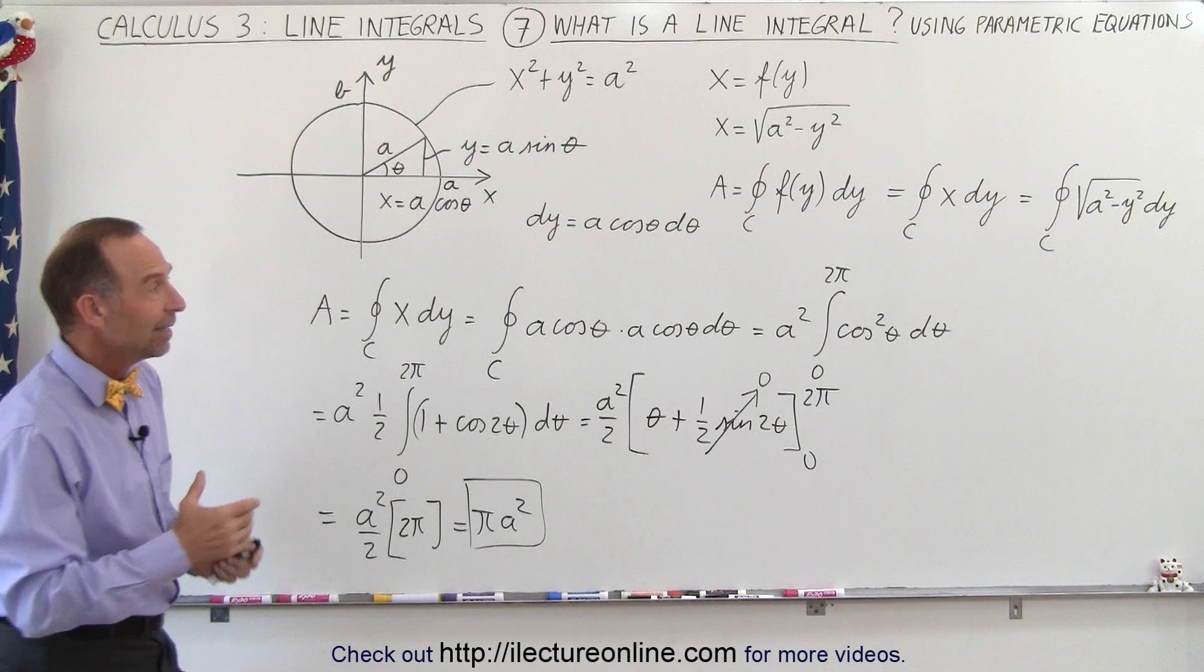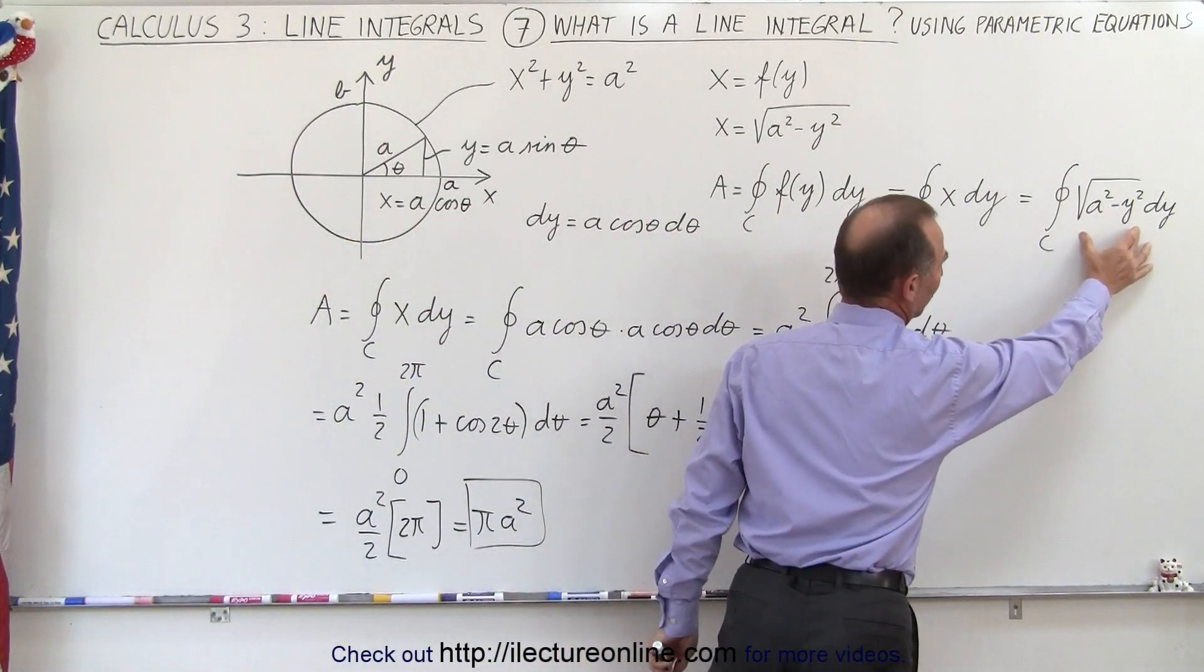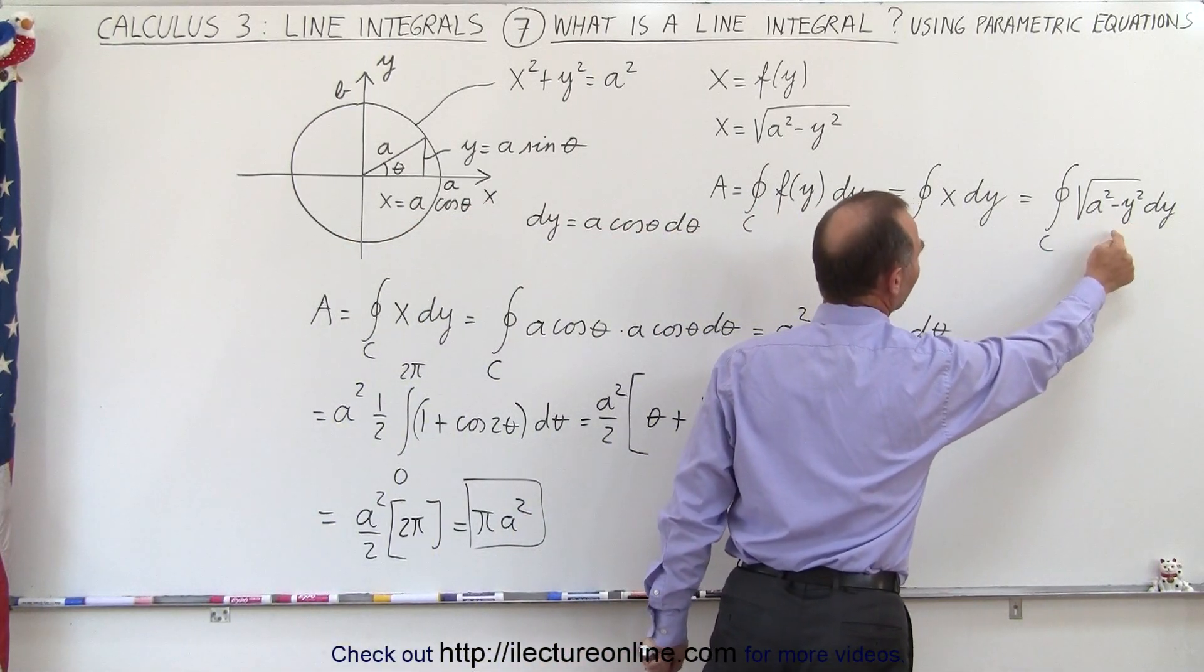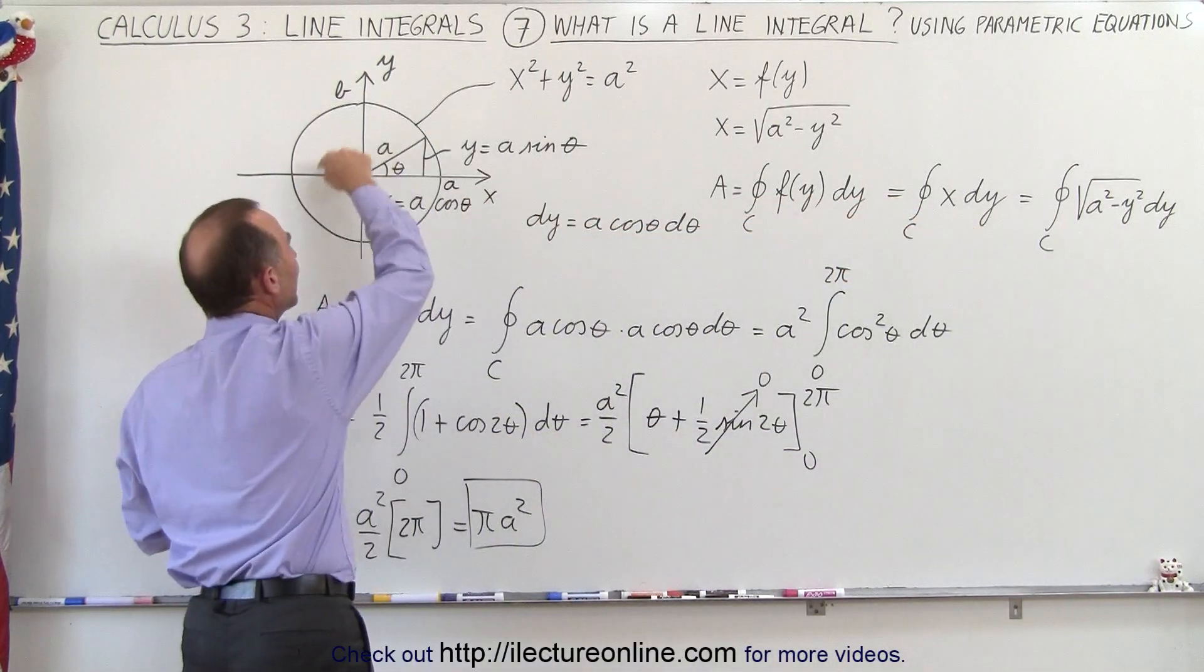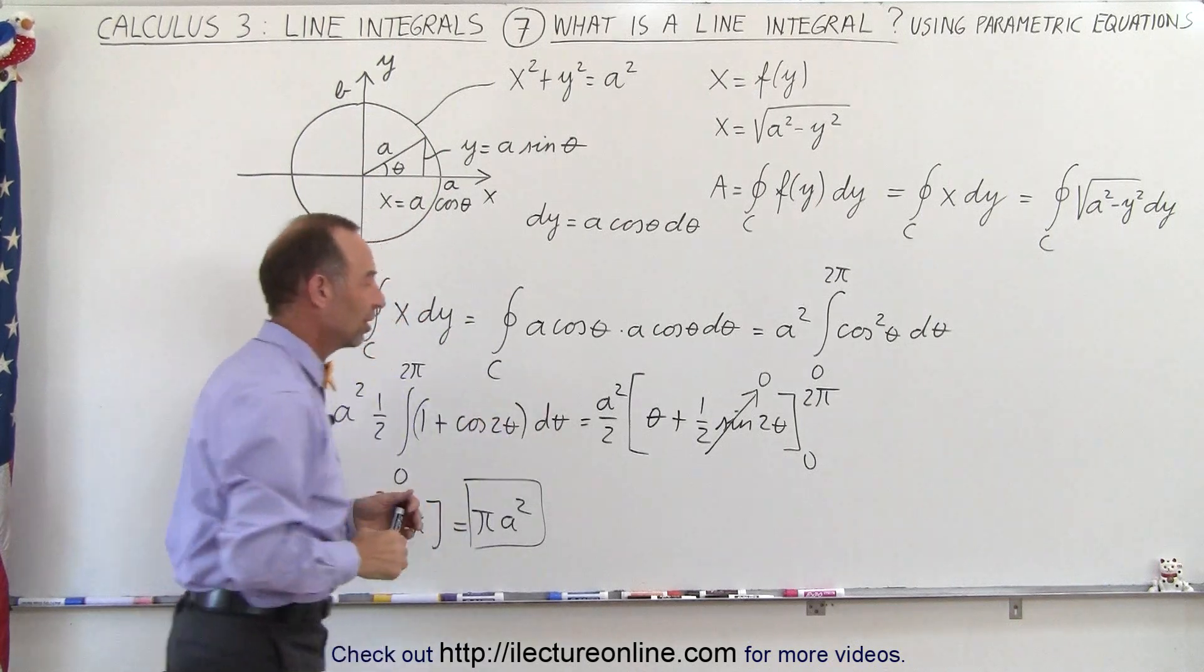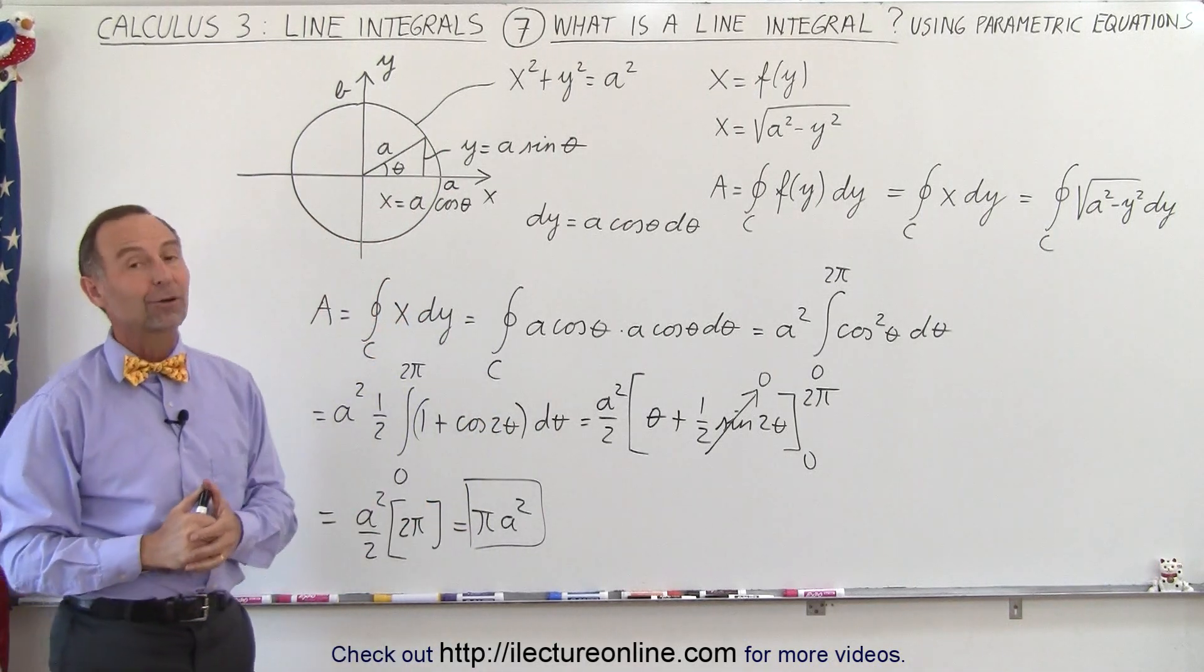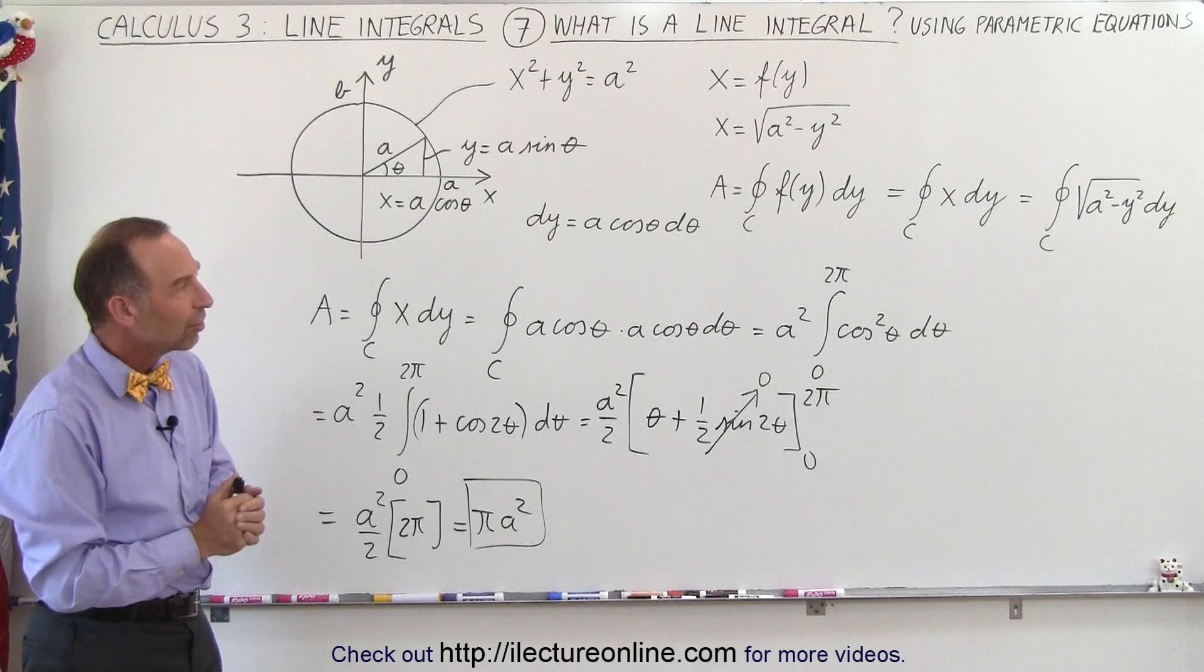So you can see by replacing something that looks like this, which is more difficult to integrate, we then replace x by the parametric equivalent in terms of the angle of the circle, then we can find a much easier integral to integrate and get the correct result.